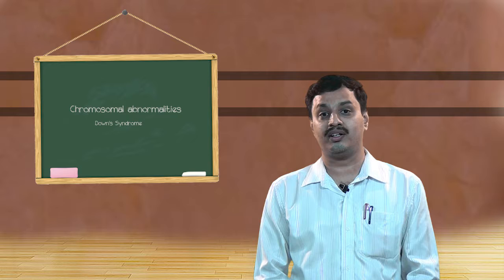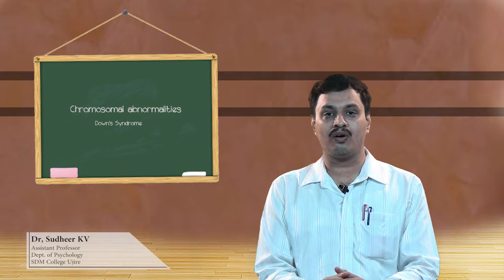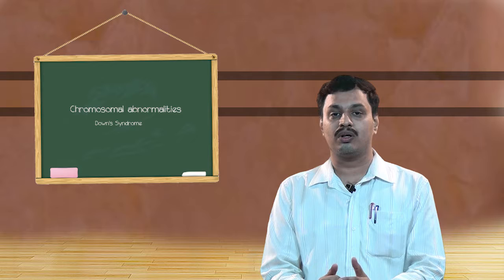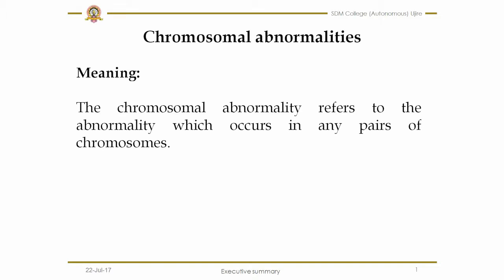Hello students, today I am here to explain you about chromosomal abnormalities. Let us see the meaning of chromosomal abnormality. Chromosomal abnormality means it is the abnormality in any pairs of the chromosomes. As you know there are 23 pairs of chromosomes, and this abnormality can occur in any of the 23 pairs.